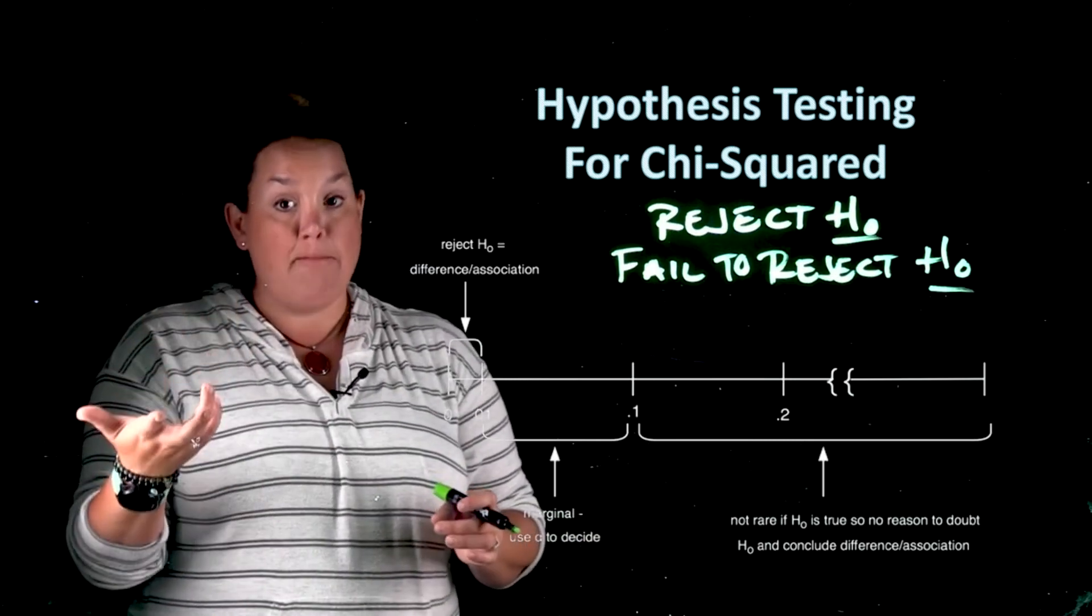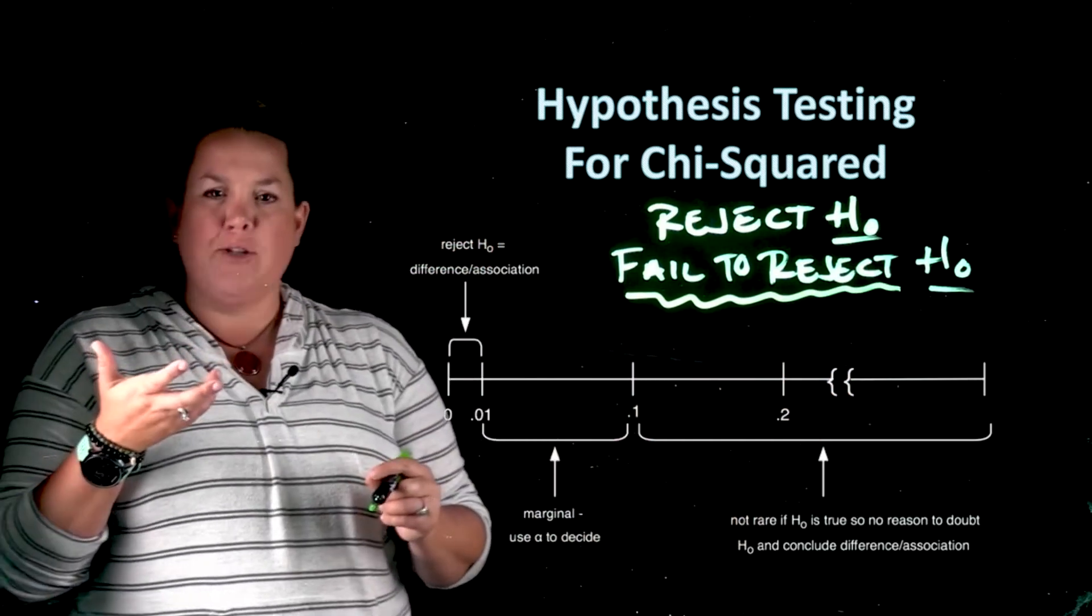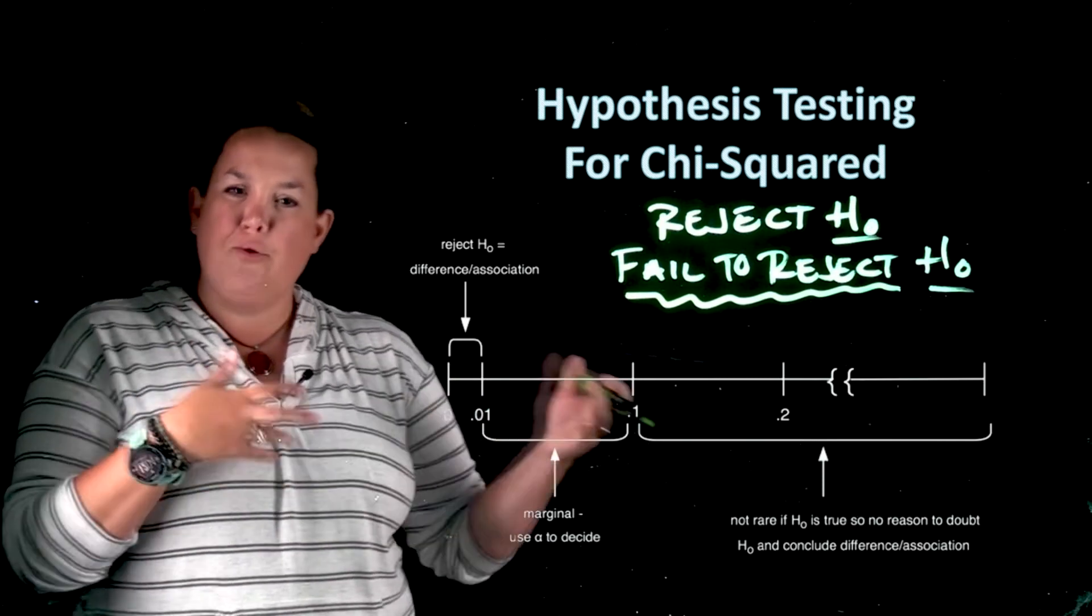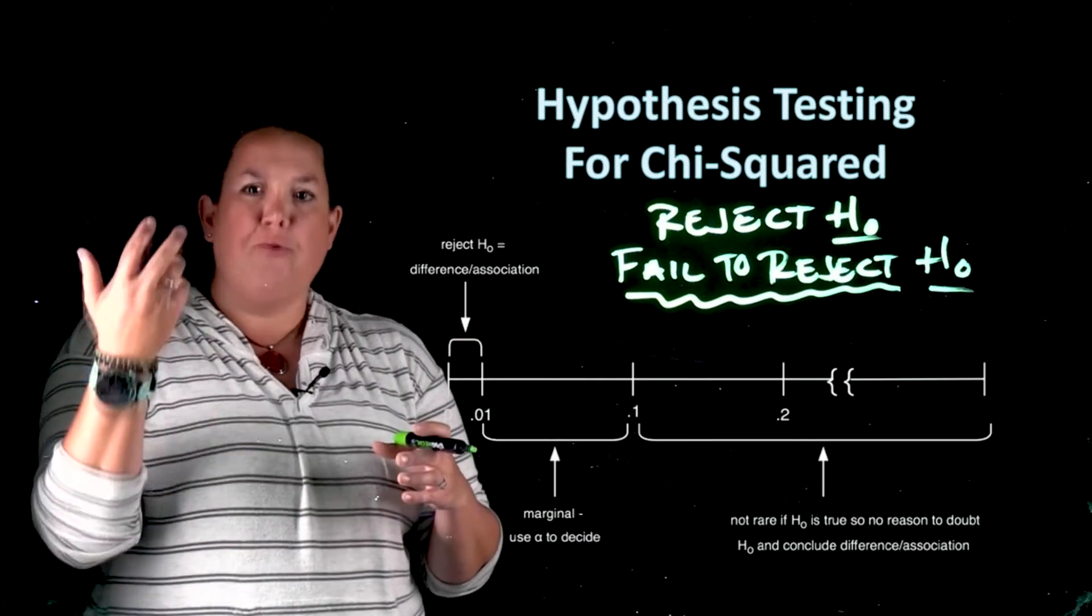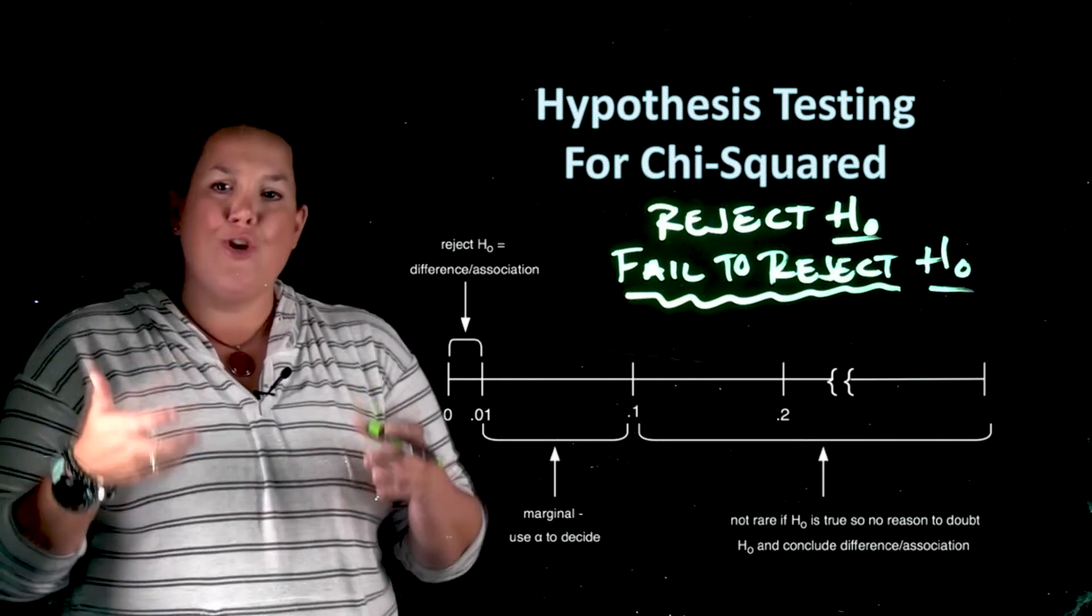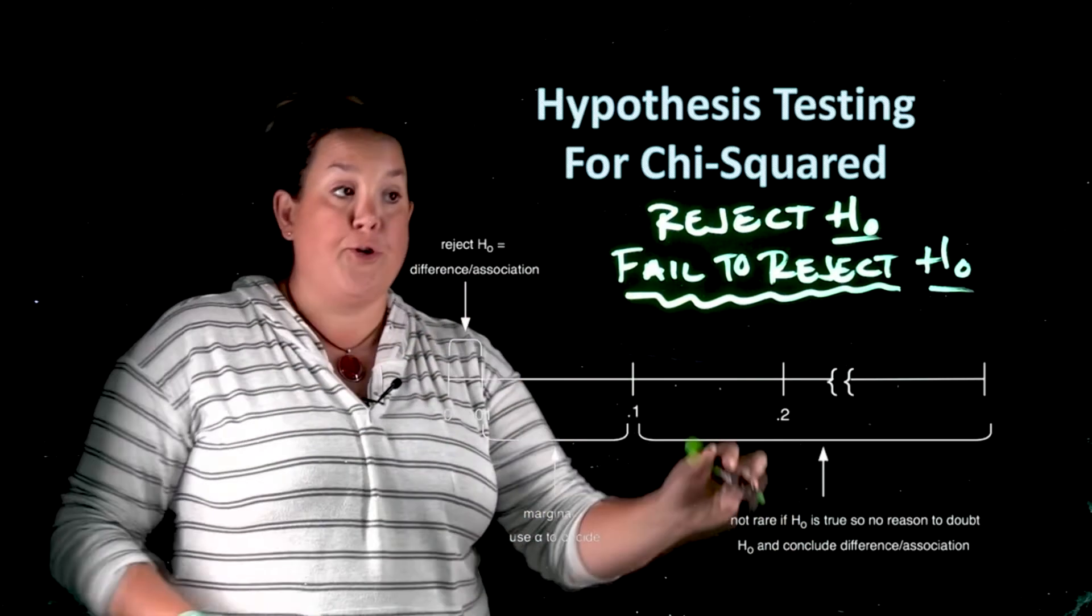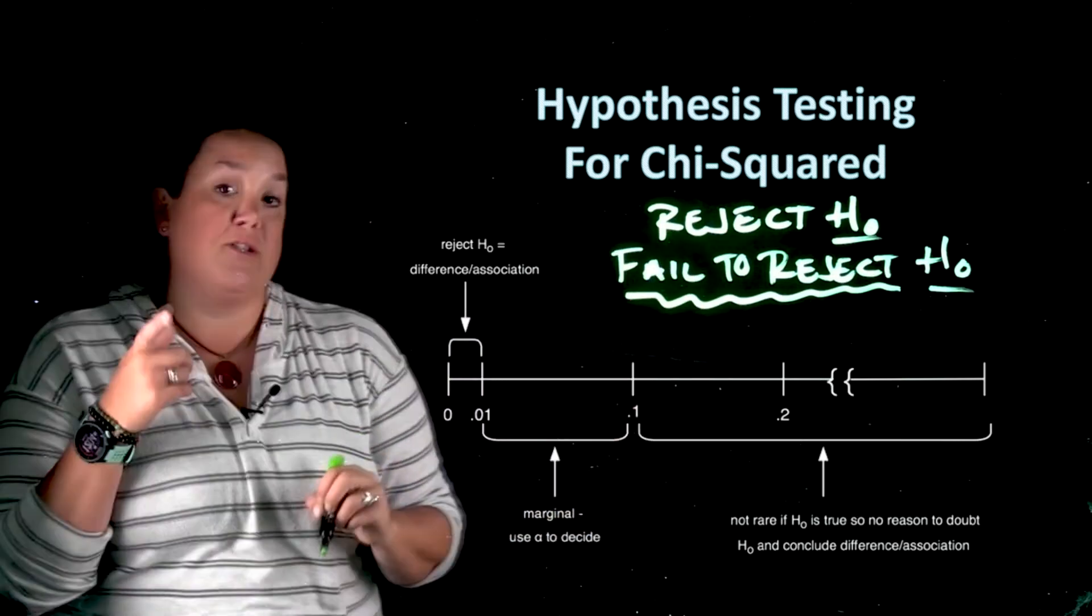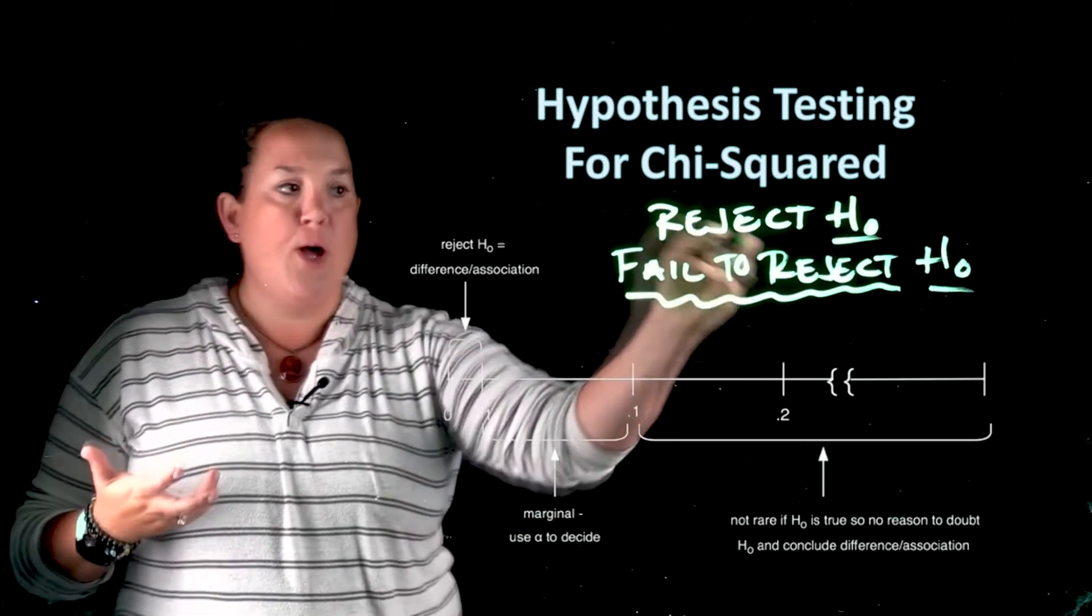We never accept the null. I know that this terminology, 'fail to reject,' might really grind you the wrong way. But essentially when you do these hypothesis tests, you're not doing it to prove that the null is true. And using the term 'accept the null' makes it seem like we have proof of the null being true. That's not how a hypothesis test is done. You're doing it to see if there's enough evidence to oppose the null in favor of the alternative. So our two decisions are rejecting the null or failing to reject the null, because when we do the hypothesis test we're not trying to prove that the null is true. Hence fail to reject.